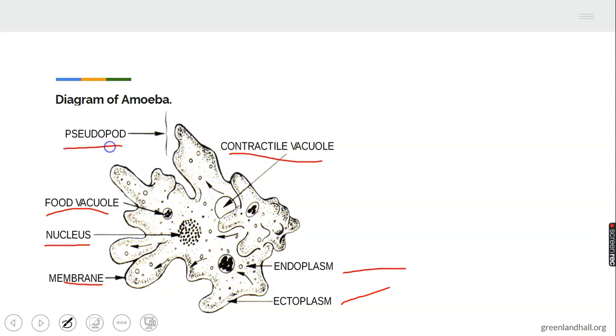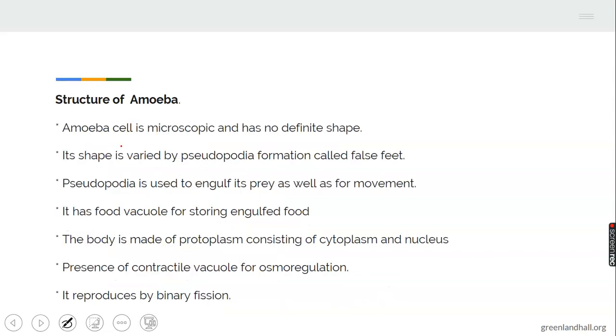The pseudopodia, or what we call the false feet, that is used in engulfing the food as well as movement. The structure of amoeba. Amoeba cell is microscopic and has no definite shape. Its shape is varied by the pseudopodia formation called false feet. The pseudopodia is used to engulf its prey as well as for movement.